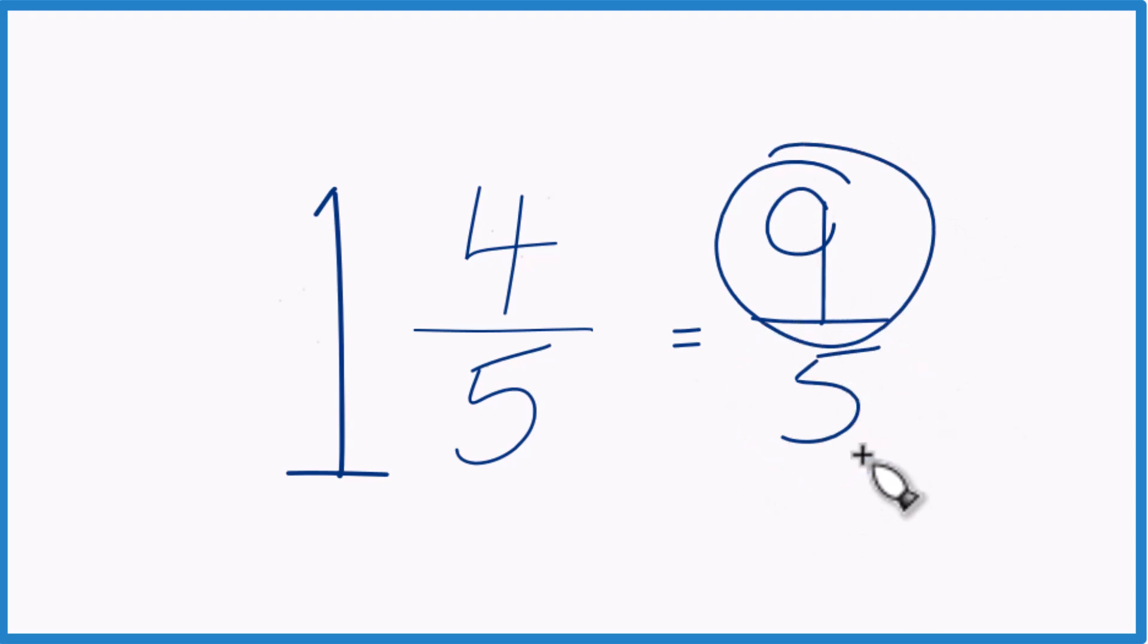Let's do that one more time. 1 times 5, that's 5. 5 plus 4, that gives us the 9 here. Just bring the denominator across. We have our improper fraction.